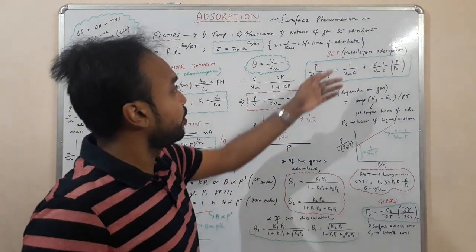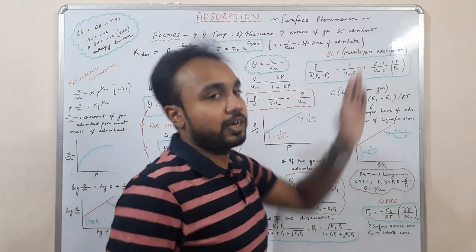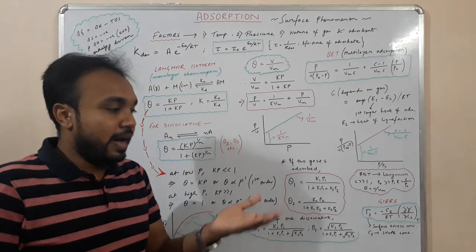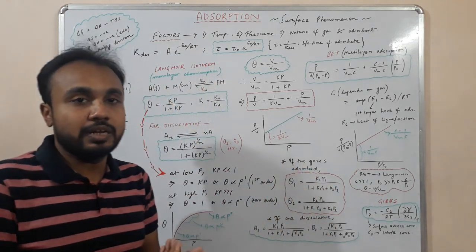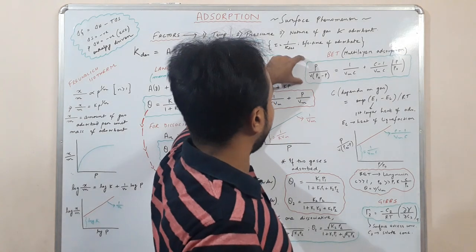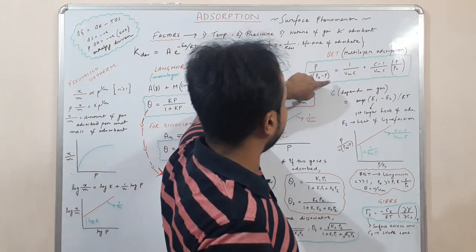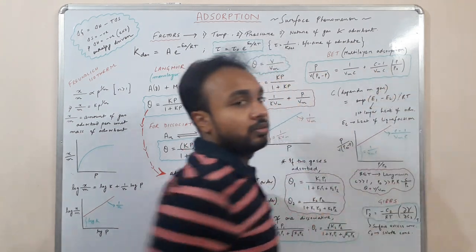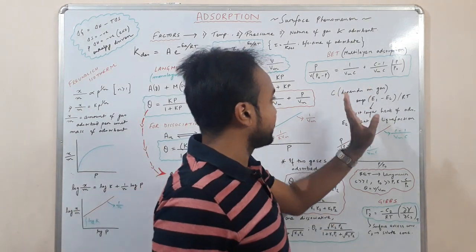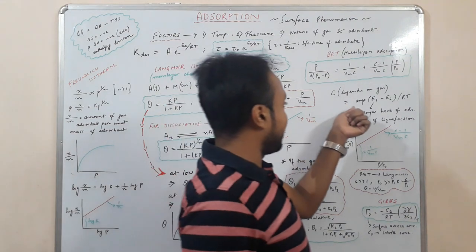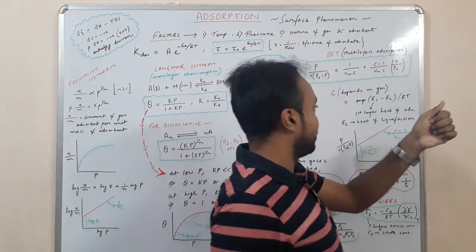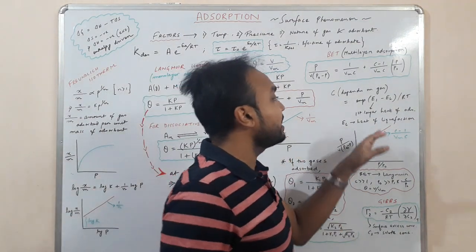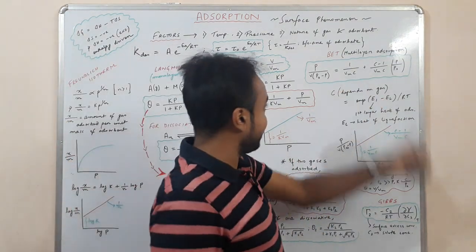The BET isotherm involves multilayer adsorption. The first layer gets adsorbed, then another layer on top, and so on. Adsorption of one layer does not depend on another. The BET equation is: P / [v(P₀ − P)] = 1/(v_m·c) + [(c − 1)/(v_m·c)] · (P/P₀). Here c is a constant equal to exp[(E₁ − E_L)/RT], where E₁ is the heat of adsorption of the first layer and E_L is the heat of liquefaction of the gas.